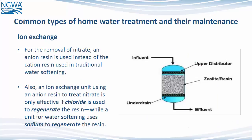For the removal of nitrate, an anion resin is used instead of a cation resin used in traditional water softening. Also, an ion exchange unit using an anion resin to treat nitrate is only effective if chloride is used to regenerate the resin, while a unit for water softening uses sodium to regenerate the resin.